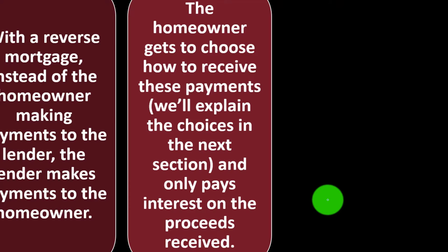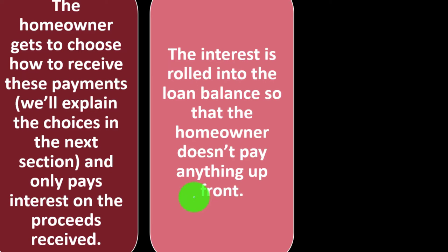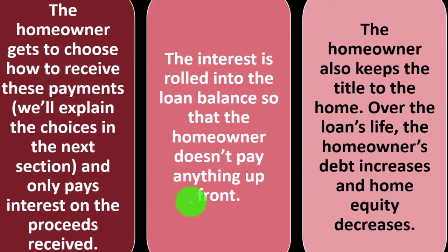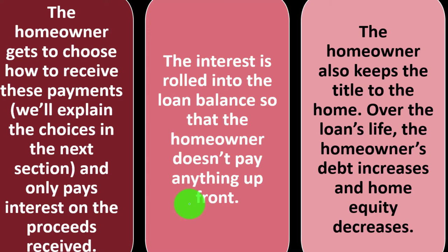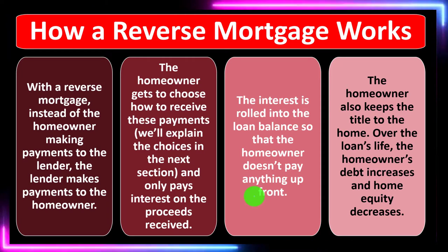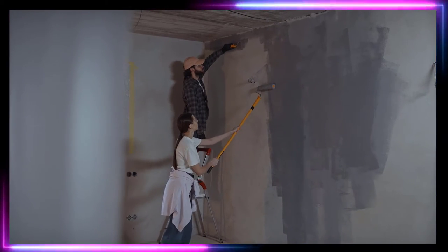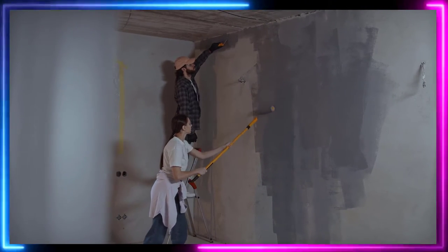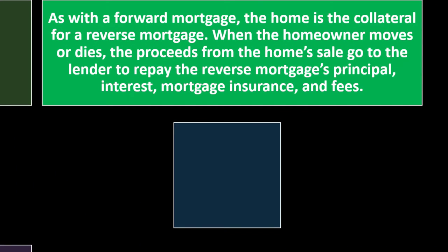The homeowner only pays interest on the proceeds received, and the interest is rolled into the loan balance so the homeowner doesn't pay anything upfront. The homeowner also keeps the title to the home over the loan's life, though the owner's debt increases and home equity decreases. As with a forward mortgage, the home is the collateral for a reverse mortgage. If there is a problem, the lender has the home as recourse.